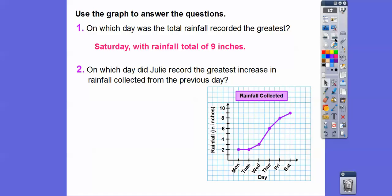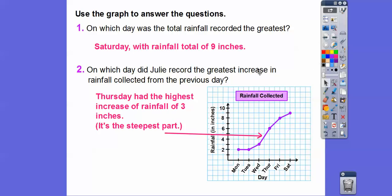Number two, on which day did Julie record the greatest increase of rainfall from the previous day? So the greatest increase is when it has the steepest slope. So right here it looks like it goes up steeper right there. So on which day did it record the greatest increase on rainfall? Thursday had the greatest increase because on Wednesday it was at 3 inches and it jumped up all the way up to 6 inches on Thursday. So Thursday it rained a lot, so it jumped up there. It's the steepest part of the graph right there.